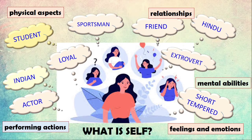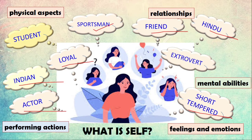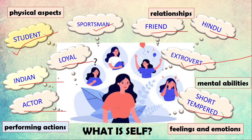What is self? When I talk to you about what is self, all of you might give me different characteristics. Some of you might say: I am a student, I am a sportsman, I am a friend, I am a Hindu, I am an Indian. Some students will say I am very loyal, I am a good actor, I am a good mimicry artist, but my temper is short. I am very fun loving, I love parties, I am an introvert, I am an extrovert, my favorite subject is biology, I am a family person. This is self — you have so many aspects of yourself.